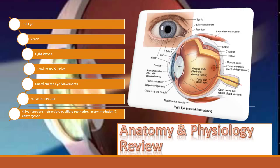Light waves that pass through the eye structures on the way to the retina are responsible for creating the image. We start with the cornea, then aqueous humor, then the lens, and then the vitreous humor. Each structure has a different density which causes the light waves to bend or refract to some degree and focus images on the retina.